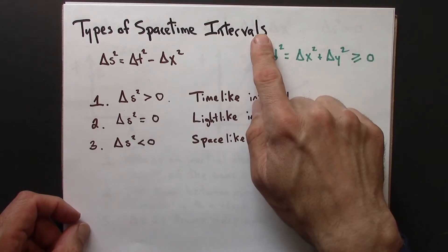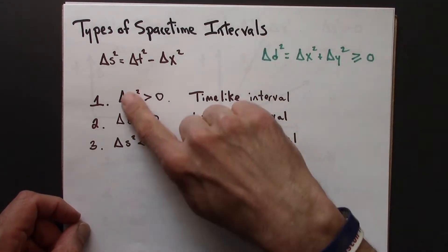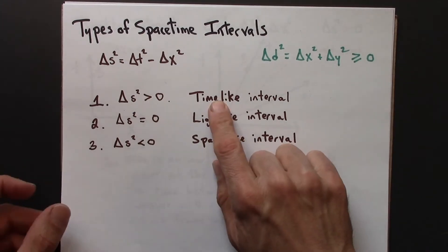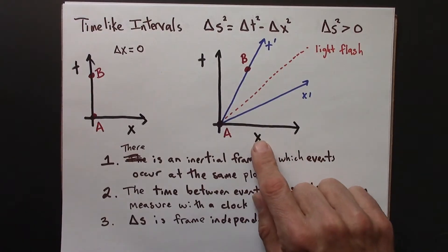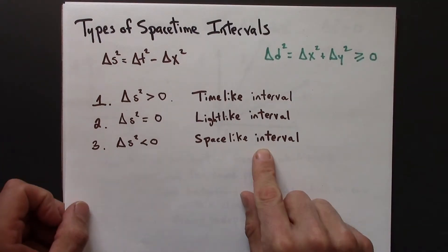So there are three types of spacetime intervals: timelike, lightlike, and spacelike, corresponding to different signs of delta s squared. In the previous video, we talked about timelike intervals, and so in this video, we'll talk about spacelike intervals.